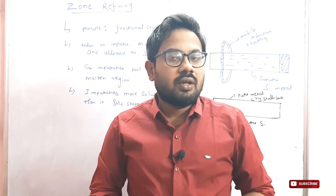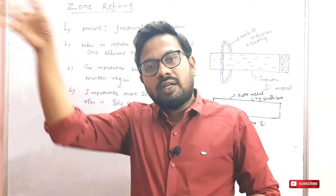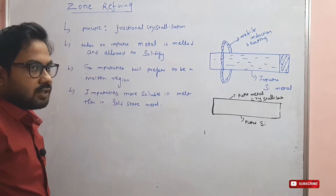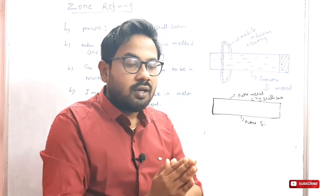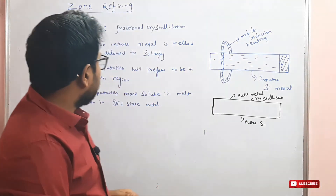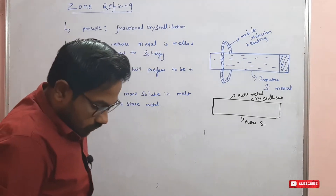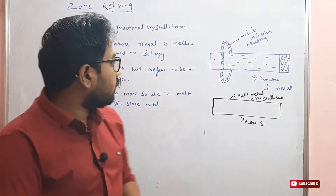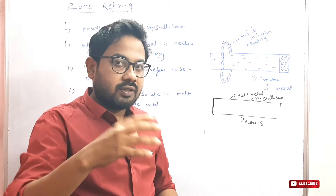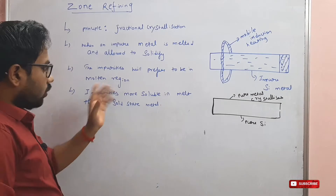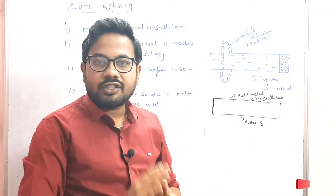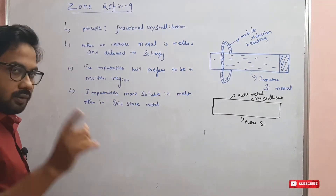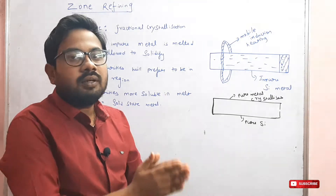Zone refining — what is refining? When an impure metal is melted and allowed to solidify, in this process we melt the impure metal. The impurities will prefer to be in the molten region. Impurities are more soluble in the melt. That means the solidified metal is purer, while impurities remain in the melted region.